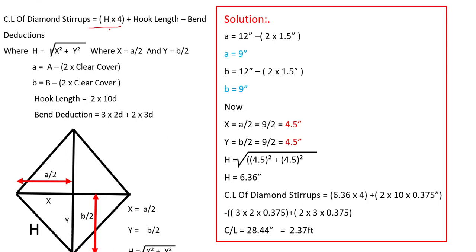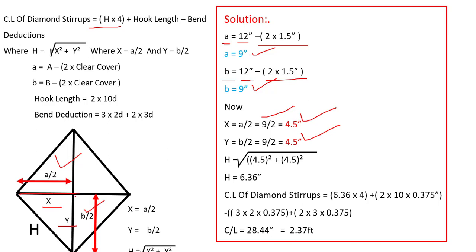Now for the solution: small a = 12 - 2×1.5 = 9 inch, and small b = 9 inch similarly. So x = a/2 = 9/2 = 4.5 inch, and y = b/2 = 4.5 inch. Applying the Pythagorean theorem: h = √(x² + y²) = √(4.5² + 4.5²) = 6.36 inch. This is the length of one side of the diamond stirrup.